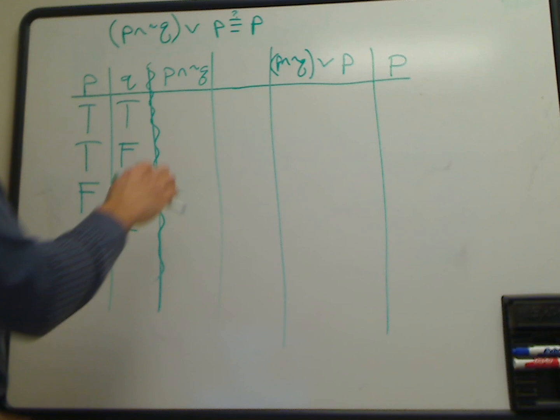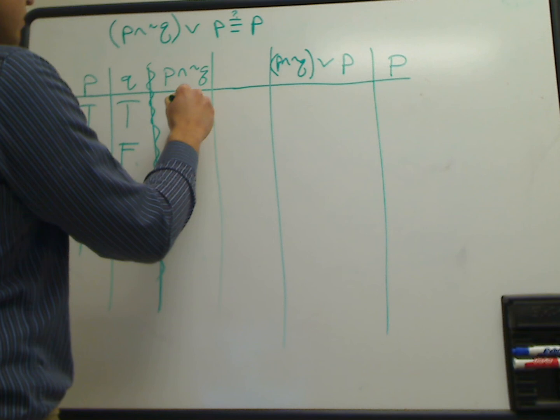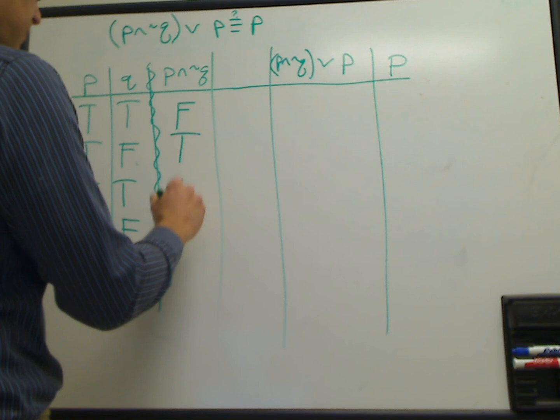So P and not Q is false for this one. It is true for the second row. It is false here and false here.